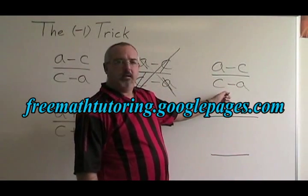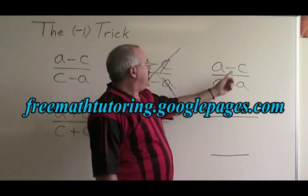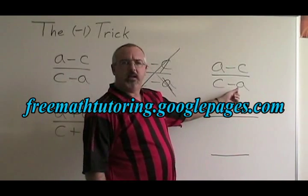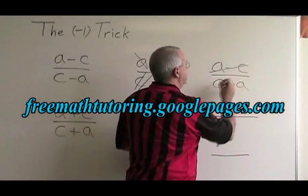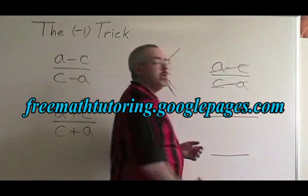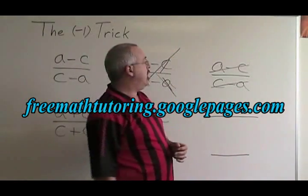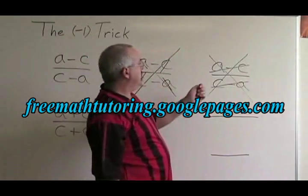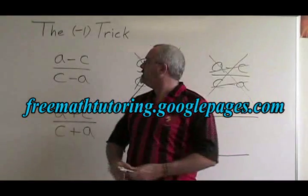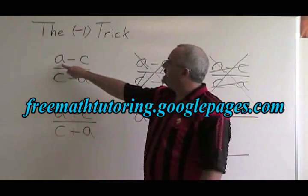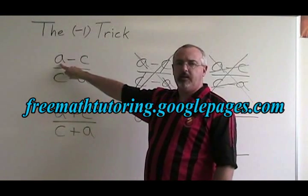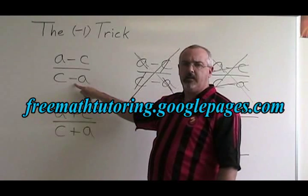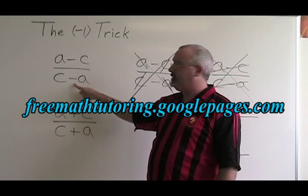Another temptation is to say, oh, a minus c looks like c minus a — they're the same, I can cancel them. That is also not allowed, because the a on the top is positive a, and the a on the bottom is a negative a. They are not the same binomial.